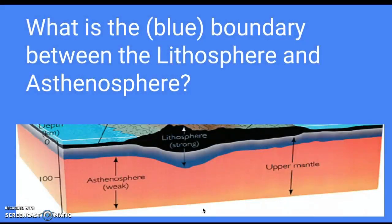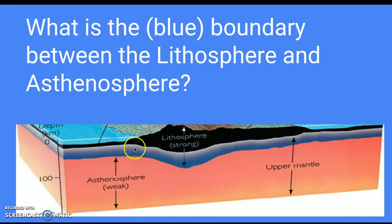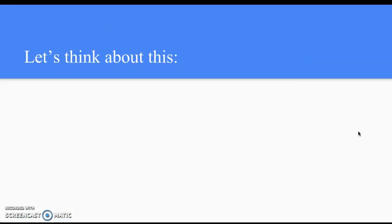What is the blue boundary in this picture between the lithosphere and the asthenosphere? And what layers of the Earth are the lithosphere and asthenosphere? The lithosphere is the crust and some of the upper mantle, and the asthenosphere is the upper mantle.